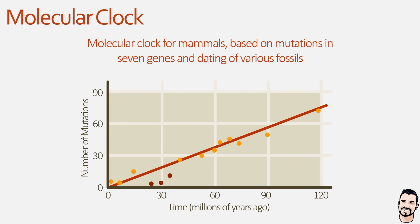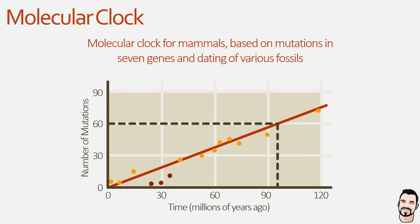We can use these trends to predict rough divergence events. For instance, if we identified approximately 60 mutations in a gene, we can use this information to suggest divergence occurred roughly 95 to 100 million years ago. An interesting point on this graph are the dark red data points, which relate to various primate species — the fact that they are quite a bit below this trend line suggests that primate genes are evolving much more slowly compared to other mammals.